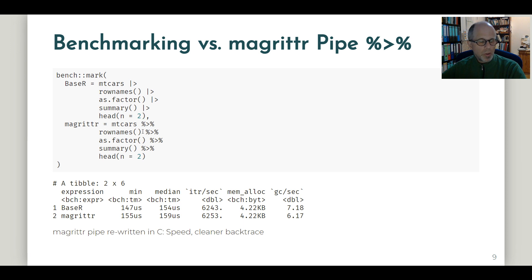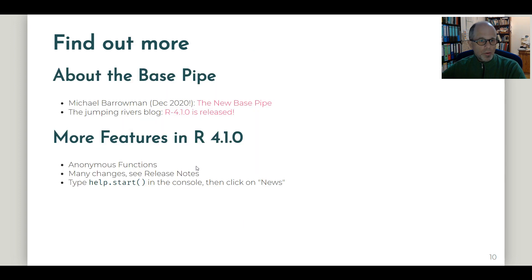Also note that this speed comparison would have been quite different not so long ago. At the end of 2020, Magrittr received the 2.0 update. And the pipe was rewritten in C. So it has become much faster and also the backtrace is cleaner now. So that's a recent improvement and compared to older versions of the pipe, it got much faster.